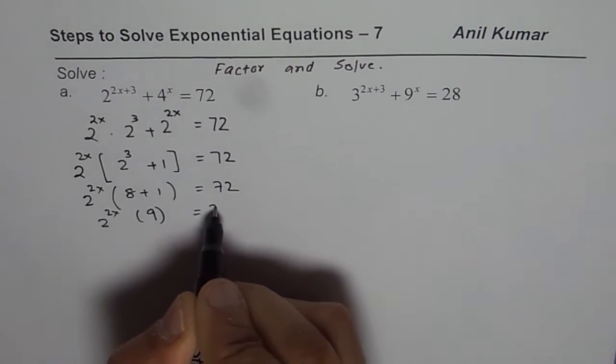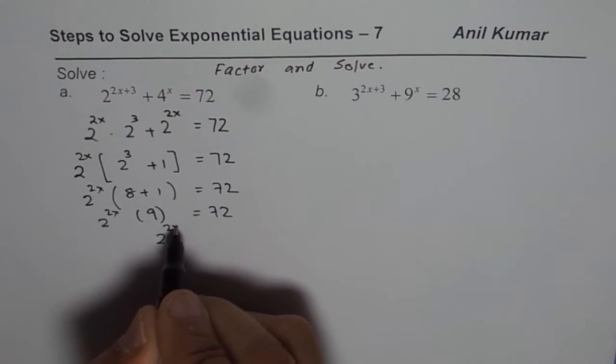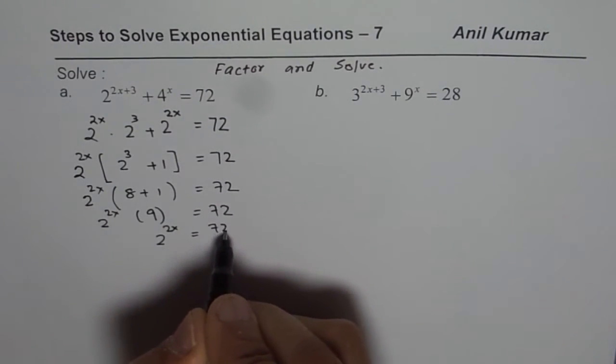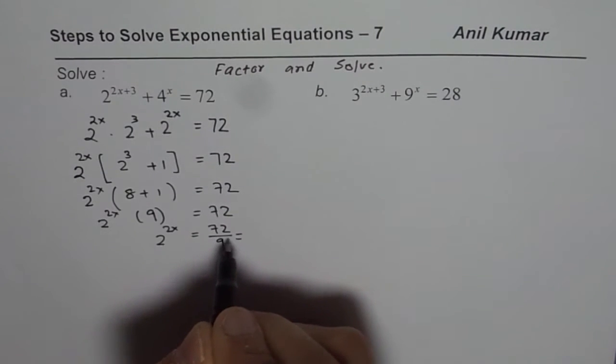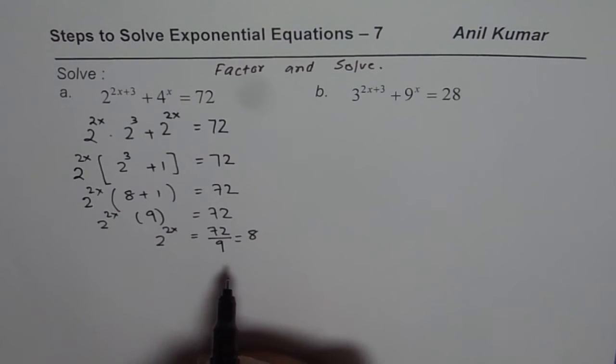So we have 8 plus 1 equals 72 and that is 2 to the power of 2x times 9 equals 72. So we can now divide by 9 to get 2 to the power of 2x as 72 divided by 9 which is 8.